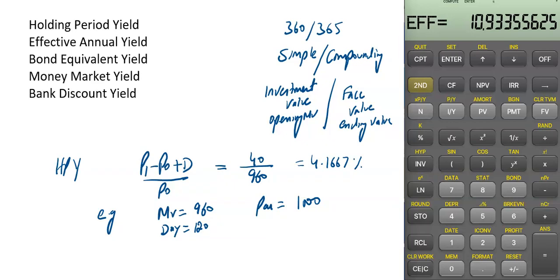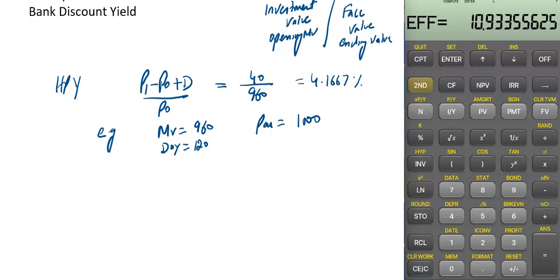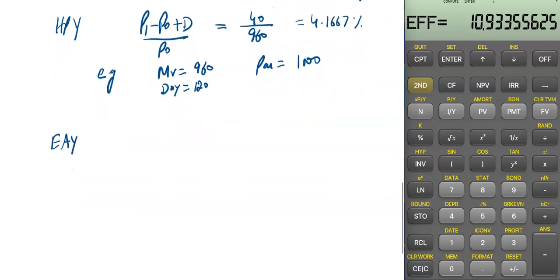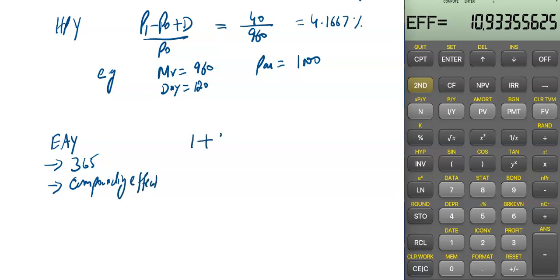This period is 120 days, and irrespective of the days, if you calculate that yield it is called the holding period yield. Next is effective annual yield. Effective annual yield is the annualized rate of the holding period yield. It considers the compounding effect and uses the 365-day convention. Its formula is: (1 + holding period yield) raised to the power (365/n) minus 1, where n is 120 in our example.